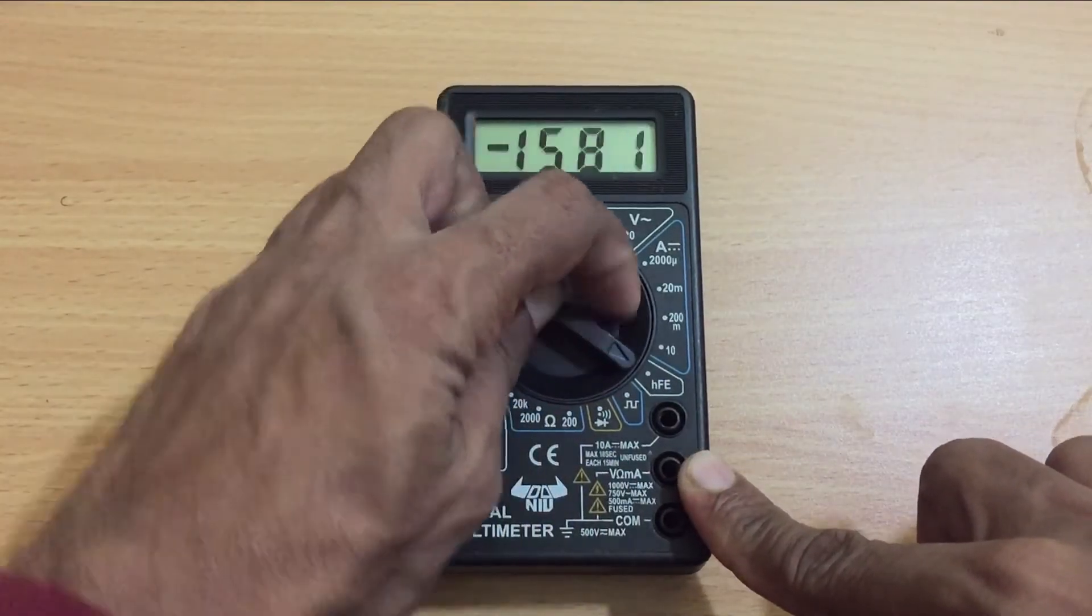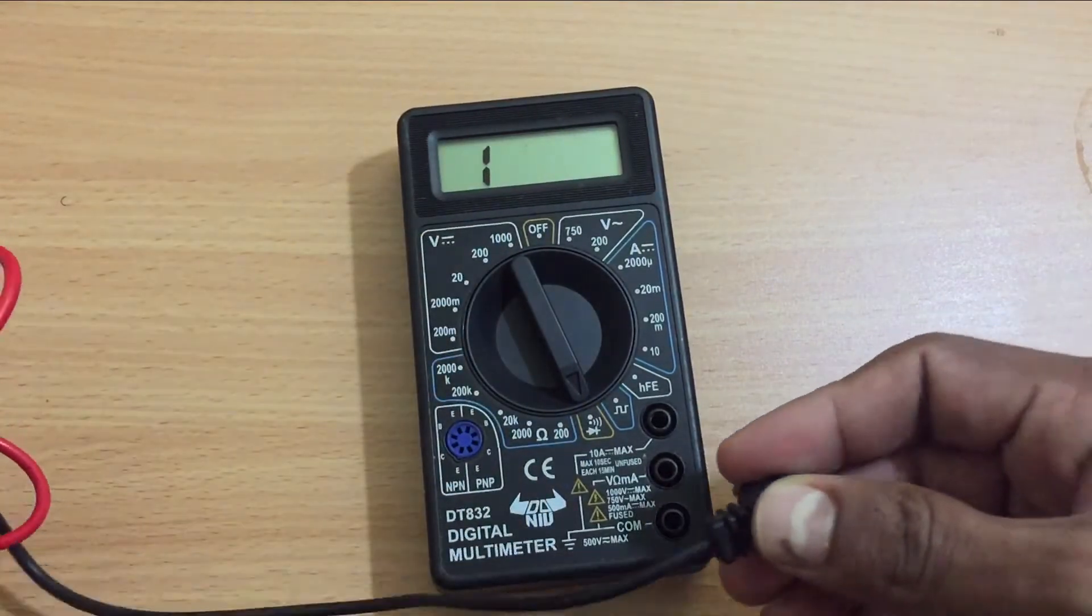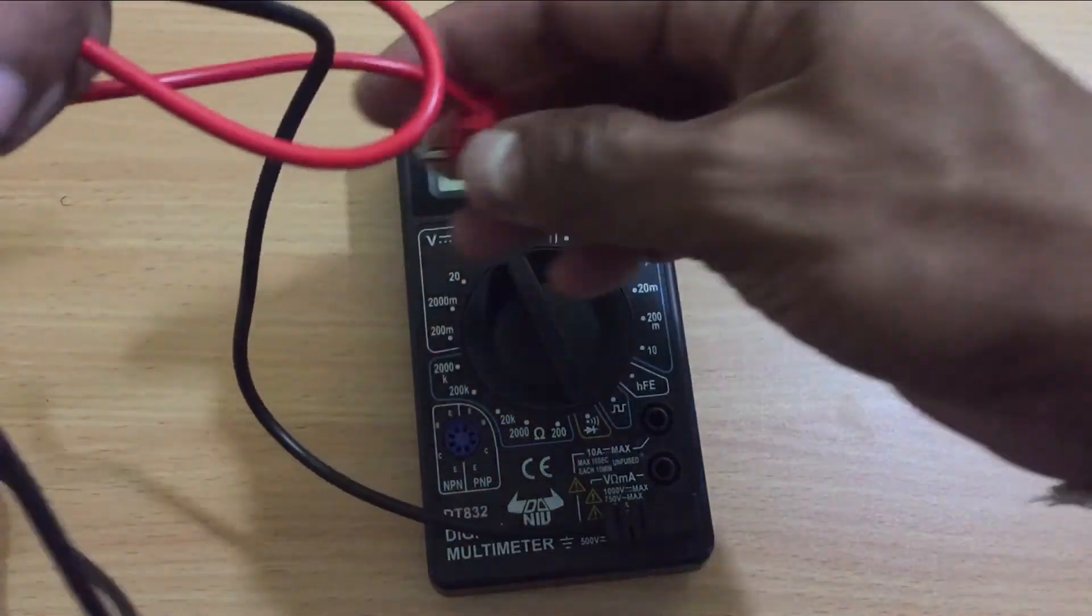Shall we power on the multimeter? When the power is on, you can see the battery indicator has gone. Therefore, we can think that the issue was with the battery.